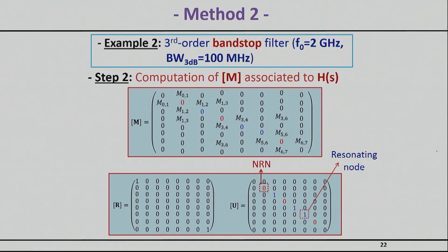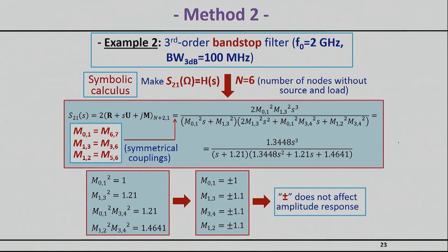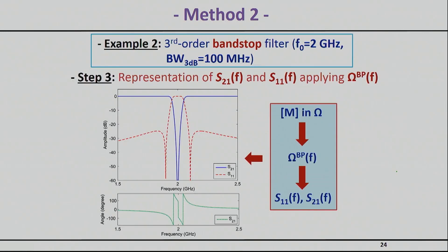In the coupling matrix for this example, only nodes 2, 4, and 5 are resonating nodes — all other diagonal entries are set to zero, either because of the synchronous design or because they are non-resonating nodes. After the math we get all coupling coefficients. Ignoring phase responses, plus or minus signs don't affect the calculations. Then frequency mapping scales the desired response to the target frequency range.